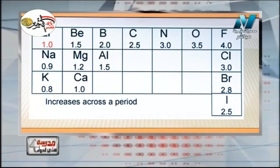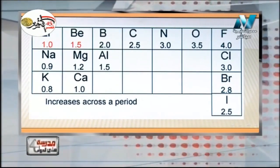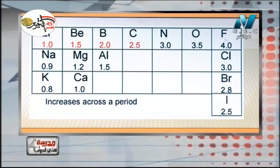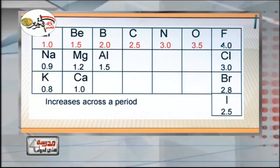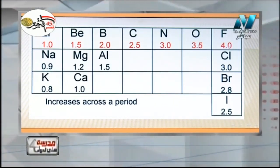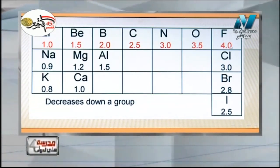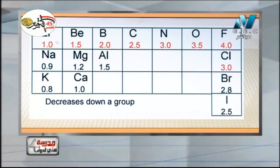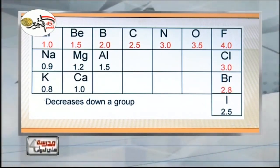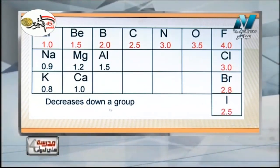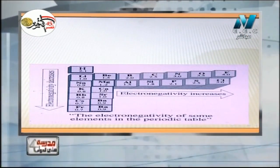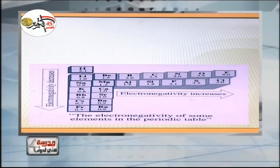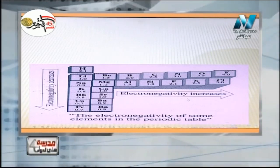This diagram shows electronegativity starting at a low value and ending with a large value at fluorine. Since fluorine has the highest electronegativity of 4, any other element will have less than 4. In a group, electronegativity decreases going down. So electronegativity in a group decreases and in a period increases — opposite to the atomic size.